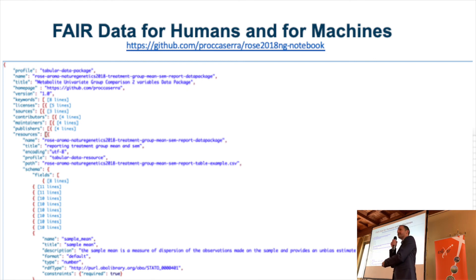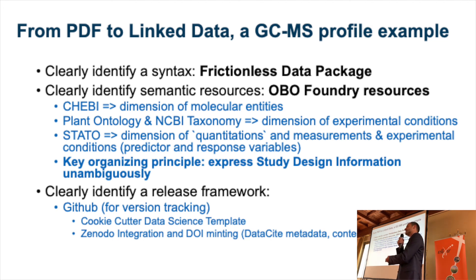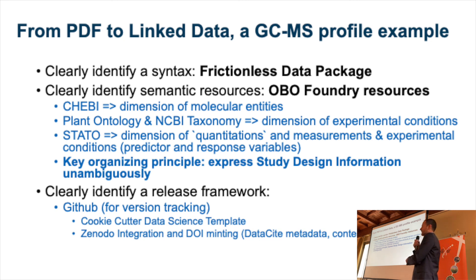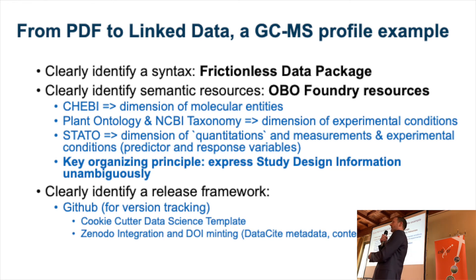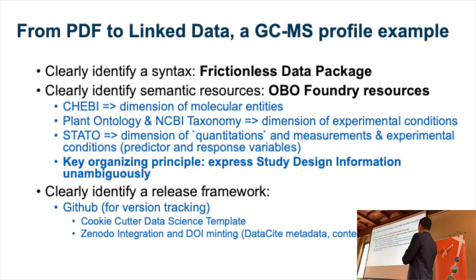The key takeaways here were: identify a syntax, choose it, and commit to it. For the semantic framework, try to be consistent — I chose ontologies which are interoperable and belong to the same framework. One important organising principle was to specifically focus on the study design information. This is a really interesting aspect that allows you to immediately add insight into the sample sizes used to compute the mean, and to know whether something is a technical or biological replicate. This is surprisingly not tapped into in large repositories. That could be a very good principle for organising data and metadata, to allow you to assess large datasets and decide whether you want to use specific elements. The code has also been released through GitHub with a DOI.